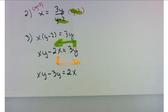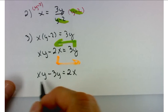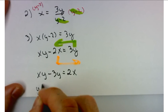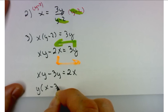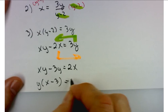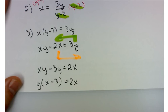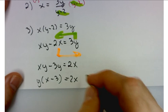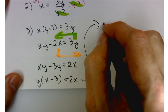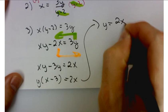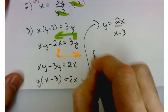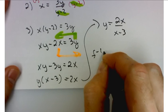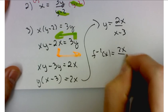Factor out the y. It leaves behind x minus 3 equals 2x. Thank you. Divide by x minus 3: y equals 2x over x minus 3. Or better yet, f inverse of x equals 2x over x minus 3.